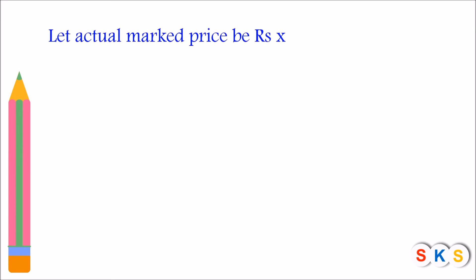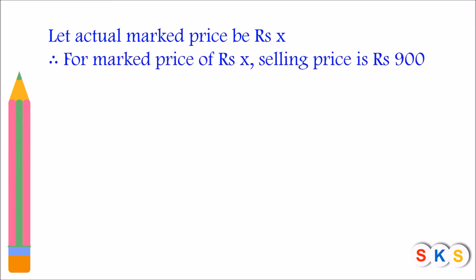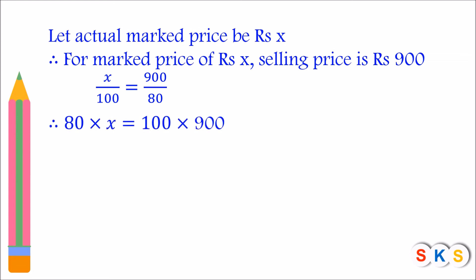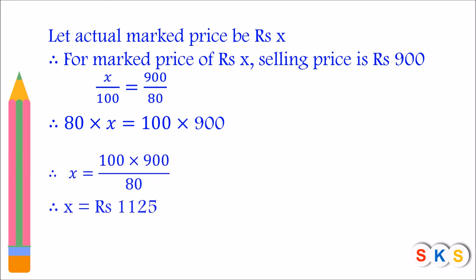So let the actual mark price be rupees x. For a mark price of rupees x, the selling price is rupees 900. By ratio: 80 upon 100 equals 900 upon x, so 80 into x equals 100 into 900, therefore x equals 100 into 900 upon 80, which gives x equals rupees 1125. So the mark price is rupees 1125.